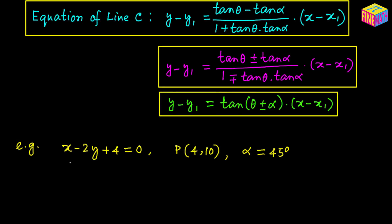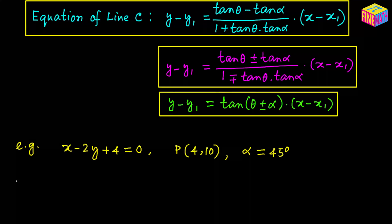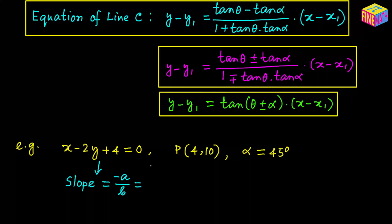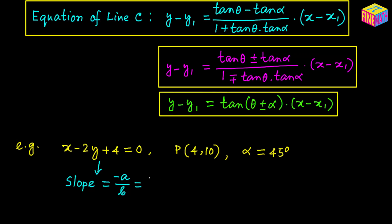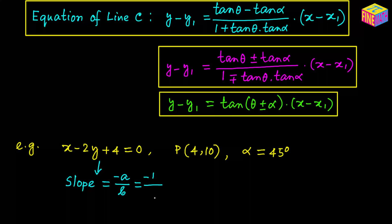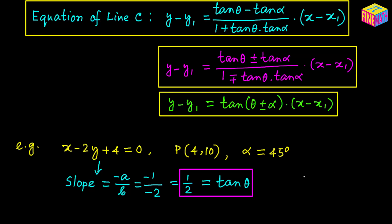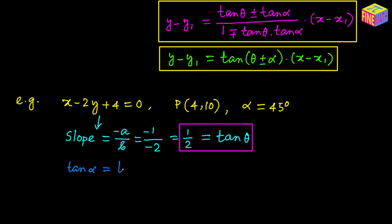From the given equation, the slope is −a/b where a = 1 and b = −2, giving slope = 1/2. So tan(theta) = 1/2. The angle alpha is 45°, so tan(alpha) = tan(45°) = 1. Now we can plug these values into the formulas.